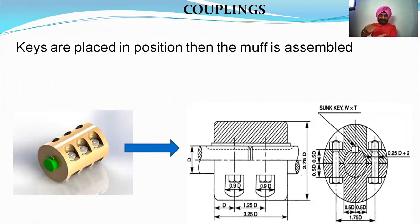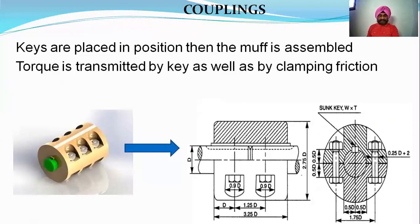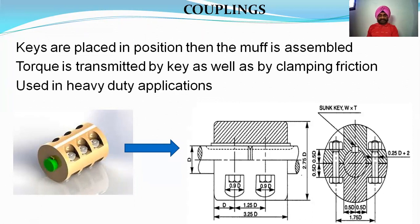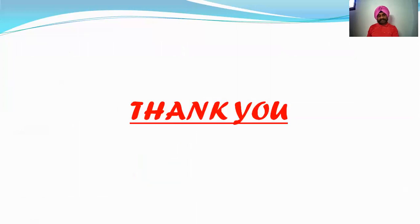First, one half is put on the shaft, then the key is placed on the shaft. Then the other half is placed and the nuts are tightened. Torque is transmitted by the key as well as by clamping friction. Split muff coupling is used in heavy-duty applications.